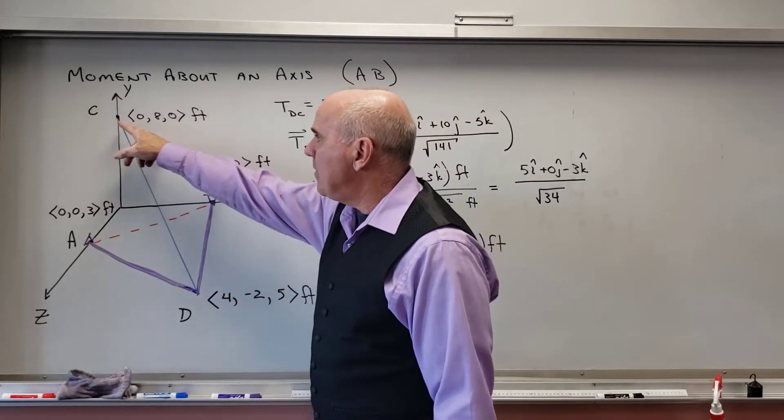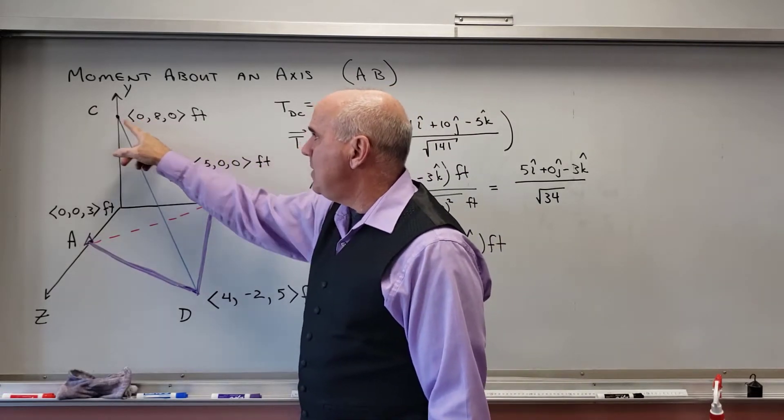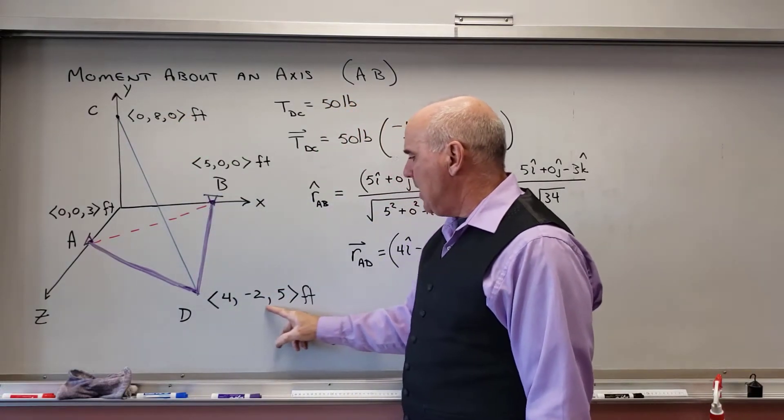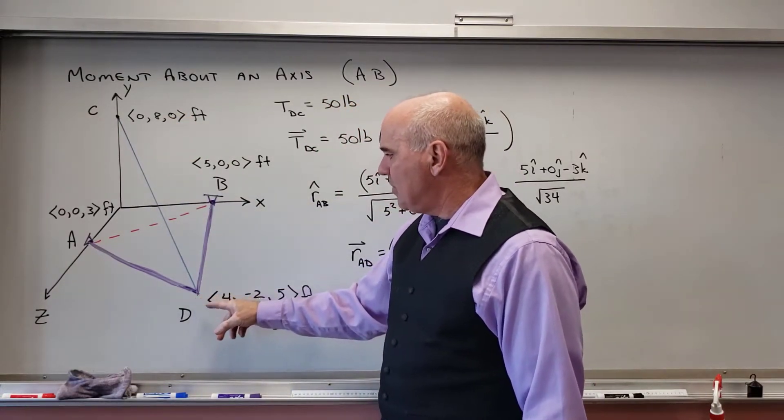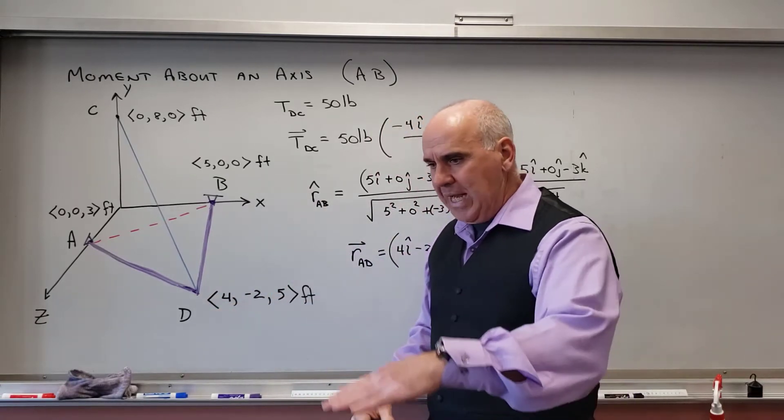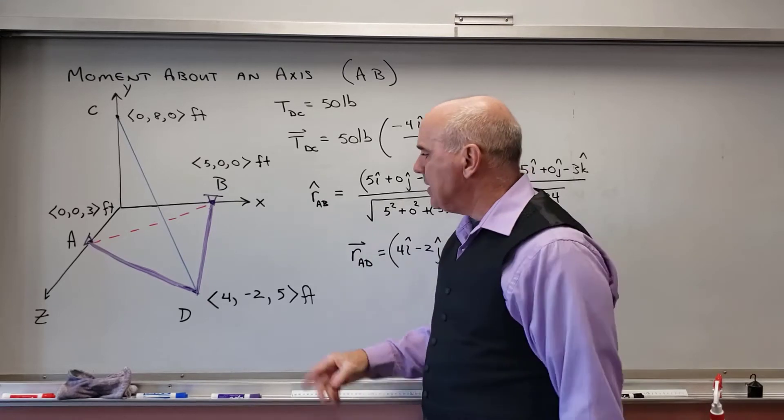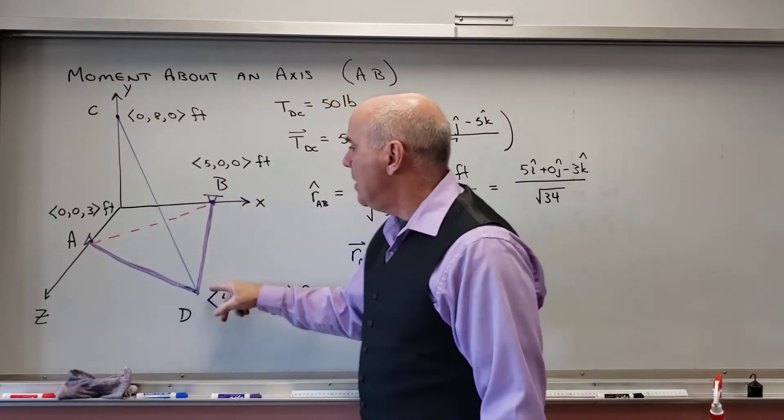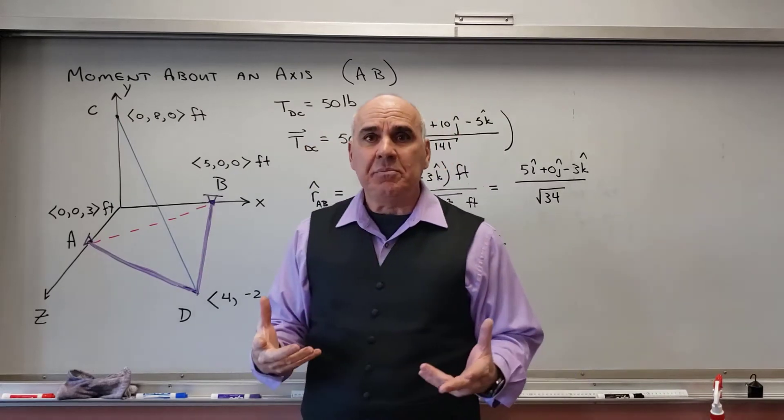And then one end of this cord is at C, which is at (0,8,0) on the y-axis, and then this corner of this frame structure is at (4,-2,5). So it's sloped down a little bit, and then I'm pulling up on that. I'm going to tell you that the tension in DC is 50 pounds. That's a given piece of information.